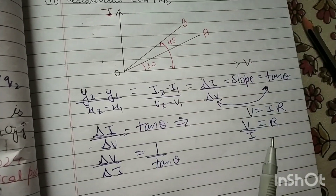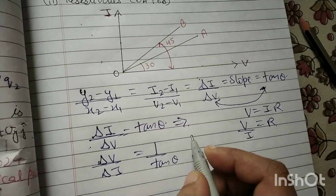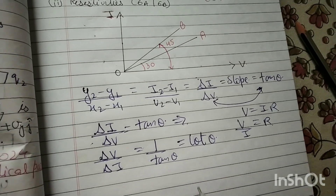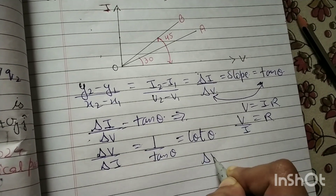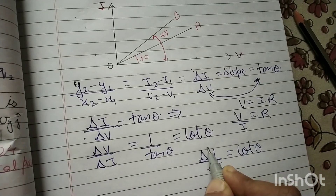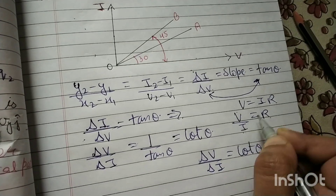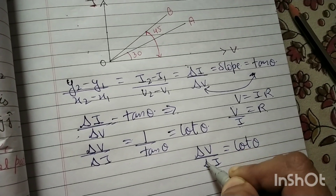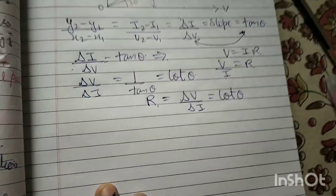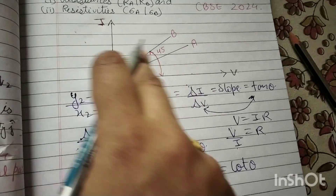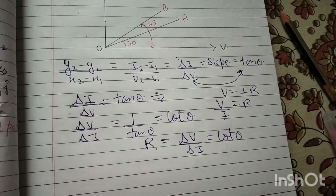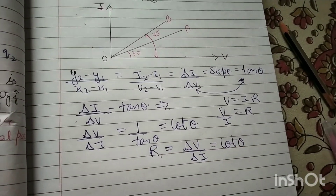So resistance equals 1 upon tan theta. If you studied in class 10, 1 upon tan theta is equal to cot theta. That means delta v upon delta i equals cot theta. And delta v by delta i — change in voltage upon change in current — is resistance. So R equals cot theta.